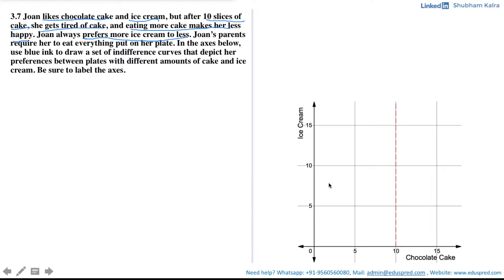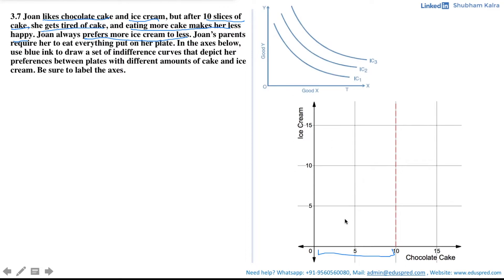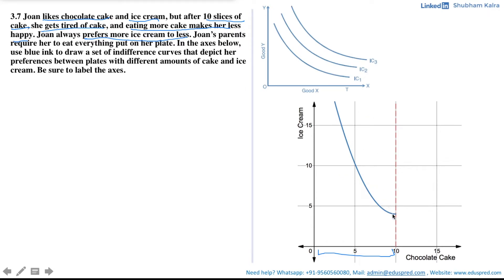Before 10 slices of chocolate cake, Joan likes both chocolate cake and ice cream, which means her preferences are well-behaved — monotonic and convex. Her indifference curves for this range would look like typical downward-sloping convex curves. Since we are not given exact preference details, the precise shape is flexible, as long as the indifference curve reflects monotonic and convex preferences.